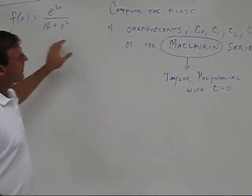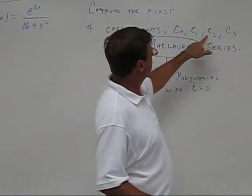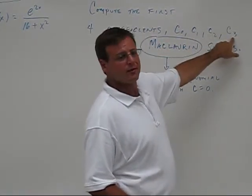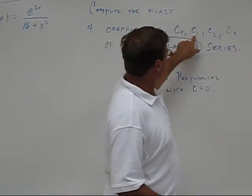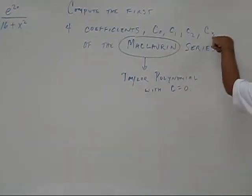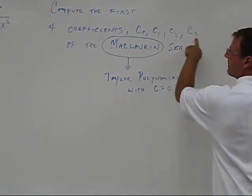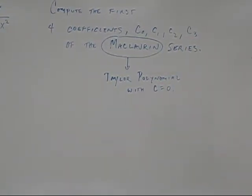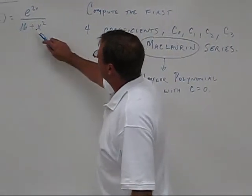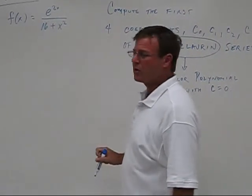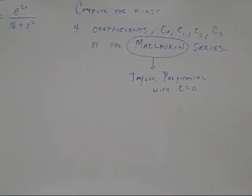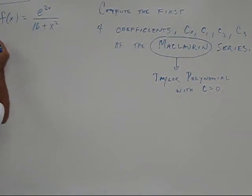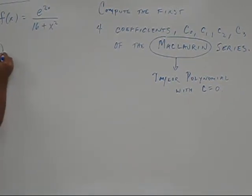But really all they want are the first four coefficients. So that's going to be all the way to the third derivative. This is the constant, the first derivative, the second derivative, the third derivative. So that looks like it's going to be a little bit messy because you're going to have to use the quotient rule and it's a lot of derivatives.